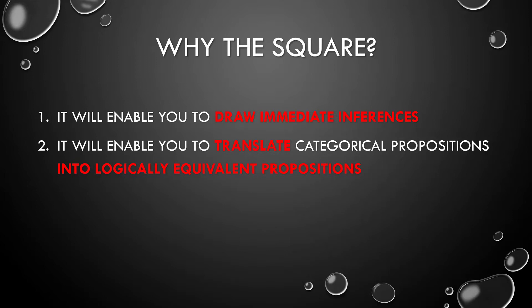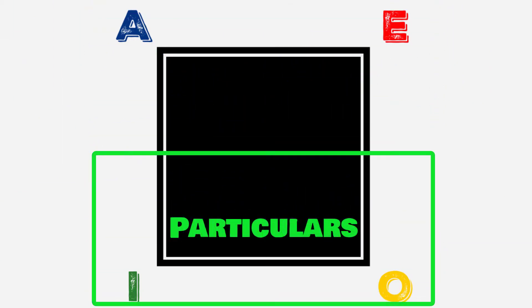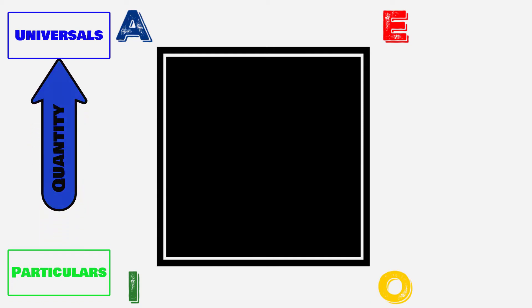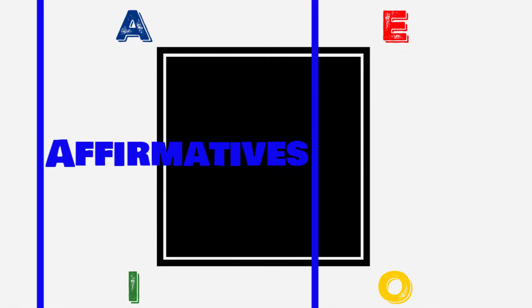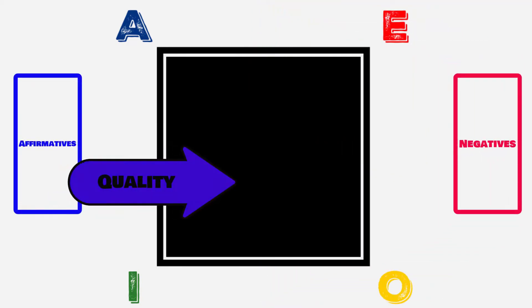Let's take a closer look at the square and walk through the relationships. Notice the corners of the square — each is occupied by one of the four types of categorical propositions. Left to right, top to bottom, we have A, E, I, and O. On the top are universals; at the base, particulars. So altitude differentiates quantity. On the left are affirmatives; on the right are negatives, each side distinguishing quality. Then we add the arrows representing the various relationships between each.